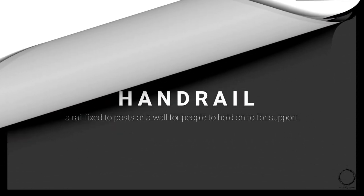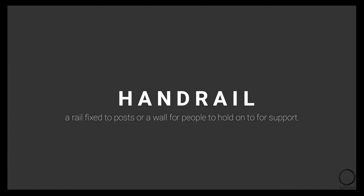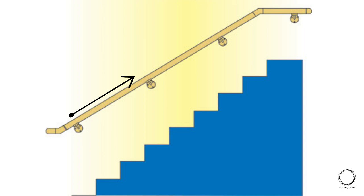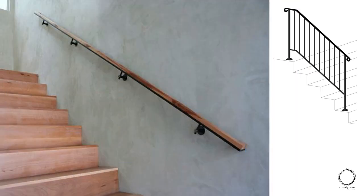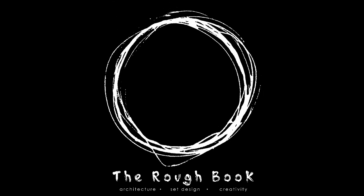The last term is handrail — a rail fixed to posts or a wall for people to hold on to for support while climbing the staircase. This brings us to the end of the video. This was a brief overview of materials commonly used in building construction, highly expected to be asked in your exam. Let me know in the comments what topic the next video should cover.